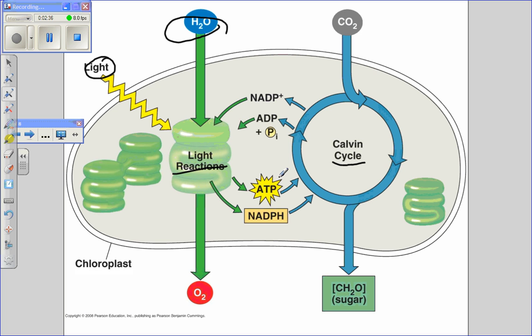These last two products of the light reactions are then consumed during the second stage of photosynthesis, the Calvin cycle.